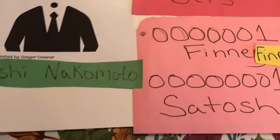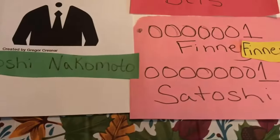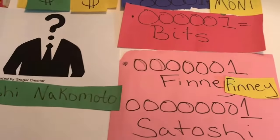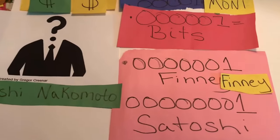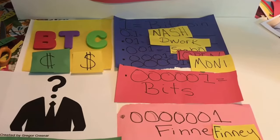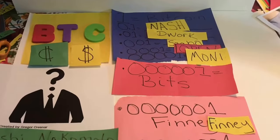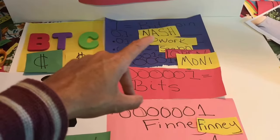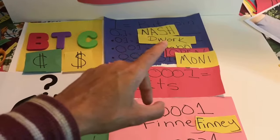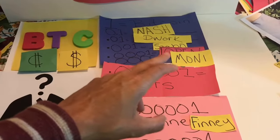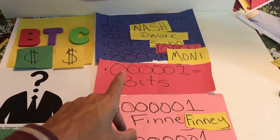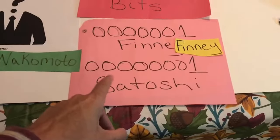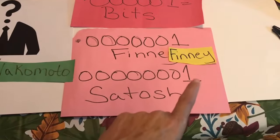Making Bitcoin more understandable and adoptable means using terms people can digest. The full denomination chain: Bitcoin at the top; 0.1 = Nash; 0.01 = Dork; 0.001 = Zabo; 0.0001 = open; 0.00001 = Moni; 0.000001 = bit; 0.0000001 = Finney; 0.00000001 = Satoshi.